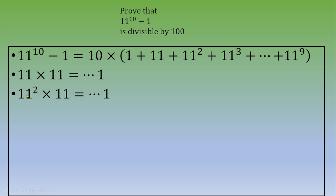Similarly, 11 cubed is 11 squared times 11, which is a number ending in 1 times another number ending in 1, so the result ends in 1. This pattern continues all the way up. When we add all 10 terms, each ending in 1, we get 10 terms, so the sum ends in 0, meaning the sum is divisible by 10.